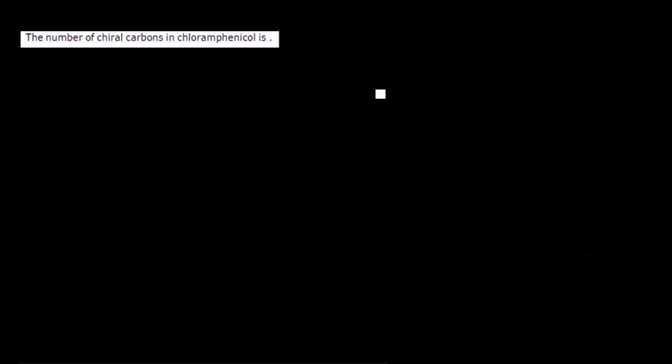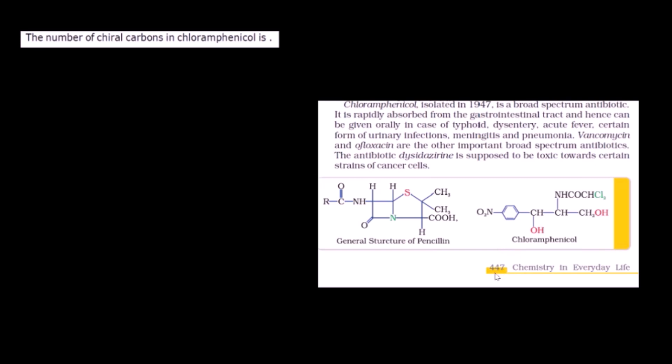The next question asks for the number of chiral carbons in chloramphenicol. This is a factual/memory-based question from NCERT Chapter 'Chemistry in Everyday Life' (page 447). The structure of chloramphenicol has exactly two chiral carbons — two carbons each bearing four different substituents. If you don't remember the structure, it's best not to attempt this in a competitive exam to avoid losing marks. Answer: 2 chiral carbons.